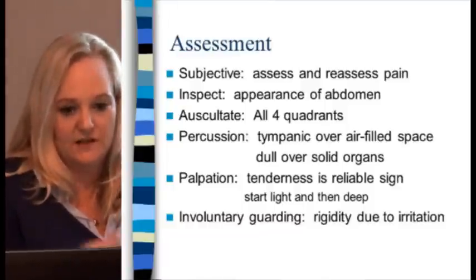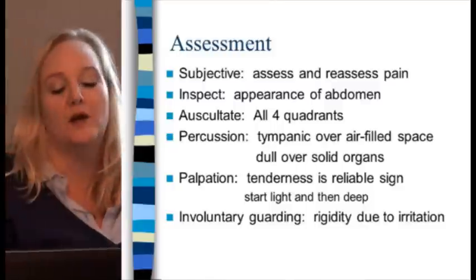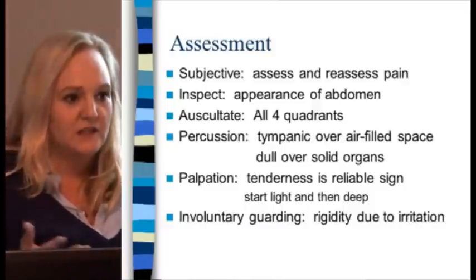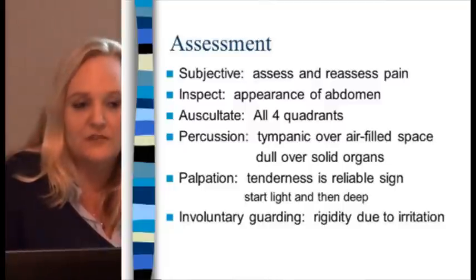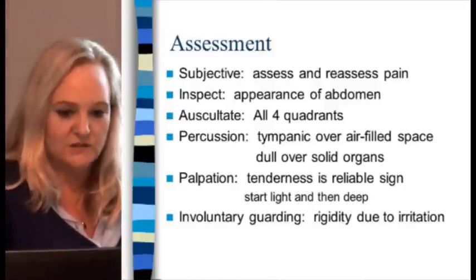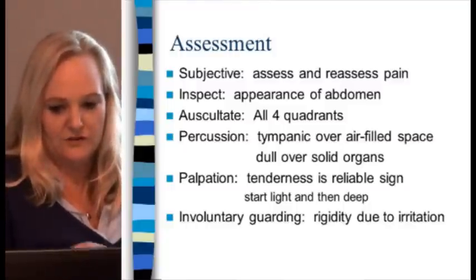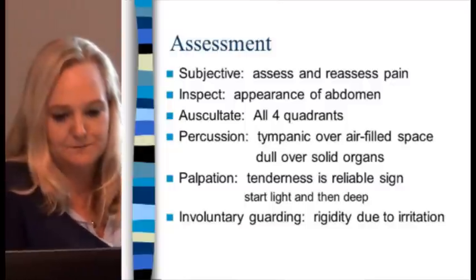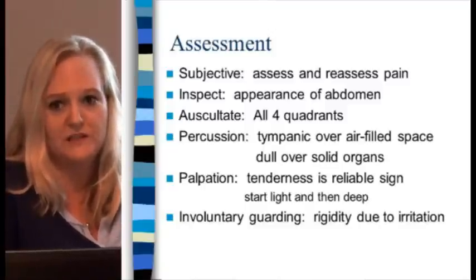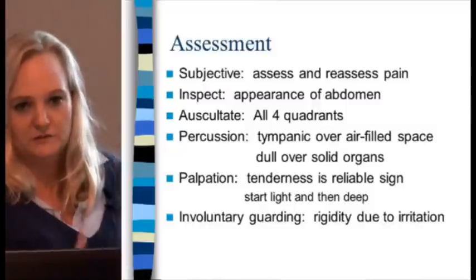For the abdominal assessment, subjectively you assess and reassess pain. During the secondary survey, they palpate the belly to find exactly where the pain is. They inspect the appearance of the abdomen — it may be soft or flat, but with an abdominal injury you'll see rigidity and severe pain when pressing on a certain area. Auscultate for bowel sounds in all four quadrants. Percussion is tympanic over air-filled spaces and dull over solid organs. Palpation is key — most of the time they can significantly identify the source, and you'll see guarding where the patient tries to pull your hand away.